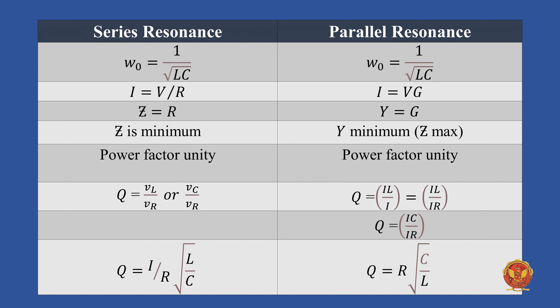What do we do in series resonance? We calculate VL by VR and VC by VR. In parallel resonance, we calculate current terms: IL by I and IC by I.